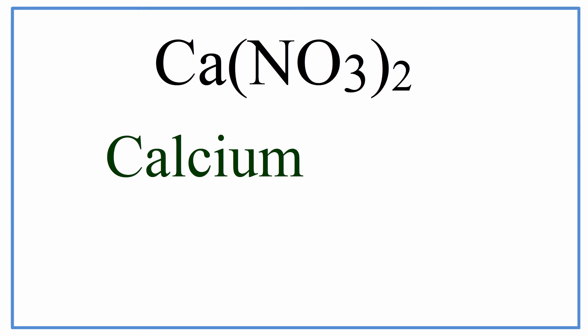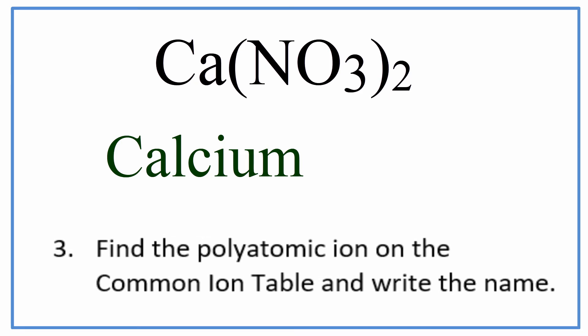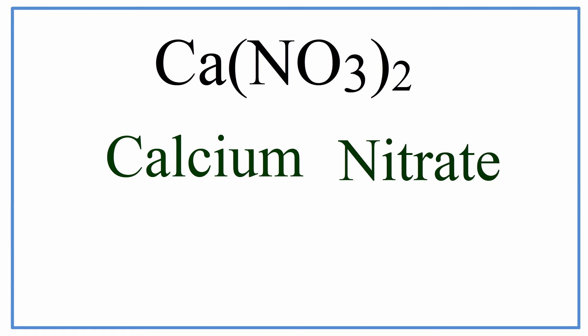After that, we're going to name that polyatomic ion, that NO3. Since it's not on the periodic table, we need to look it up in a common ion table. So NO3 is a nitrate ion, and that's the name for Ca(NO3)2, calcium nitrate.